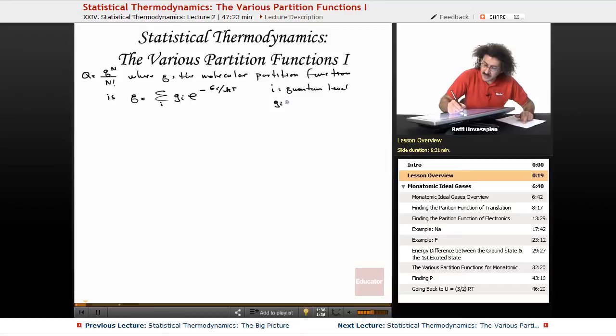G sub i is the degeneracy of the i-th level. And e sub i is the energy of the i-th level.